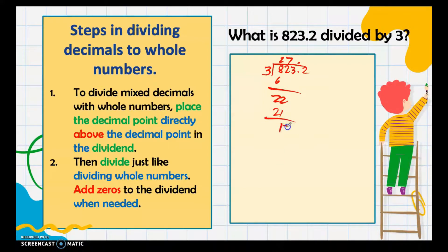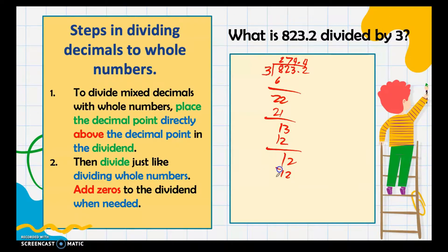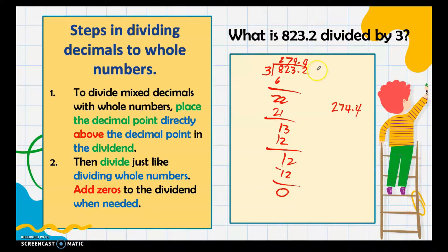Continuing: bring down 2 giving 22; 22 divided by 3 is 7, 7 times 3 is 21. Bring down 3 giving 13; 13 divided by 3 is 4, 4 times 3 is 12 with remainder 1. Bring down 2 giving 12; 12 divided by 3 is 4, no more remainder. Our answer is 274.4. If there is still a digit and a remainder, add more zeros and continue dividing until there is no remainder.